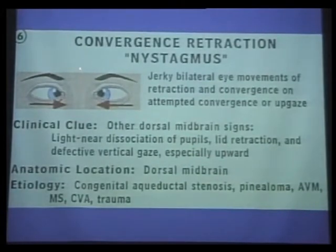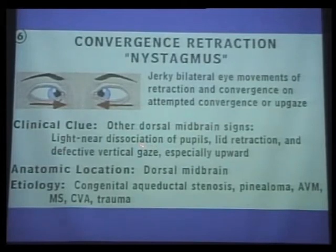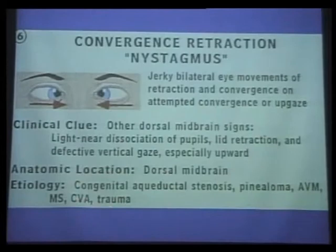When patients try to look up—usually provoked by saccades, so I'll sometimes use an optokinetic drum rolling downward to induce an upward saccade—they get this jerky convergence and retraction movement, sometimes better seen from the side. You're looking for other signs of dorsal midbrain involvement: light-near dissociation of pupils from Edinger-Westphal nucleus involvement, lid retraction in primary position (Collier's sign), and impaired vertical gaze. Upgaze is usually affected first because a single lesion in the posterior commissure produces the upgaze palsy.